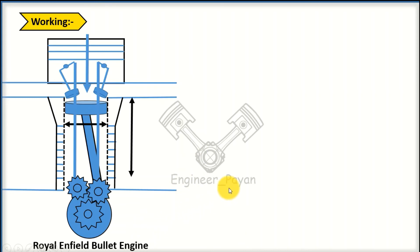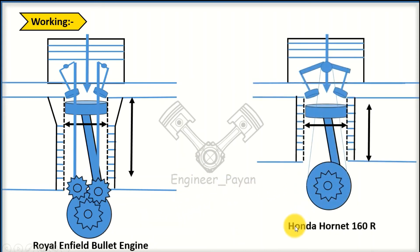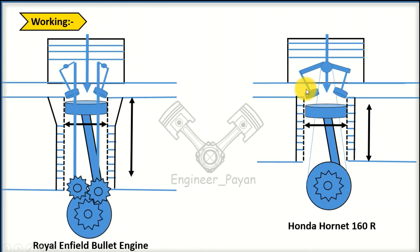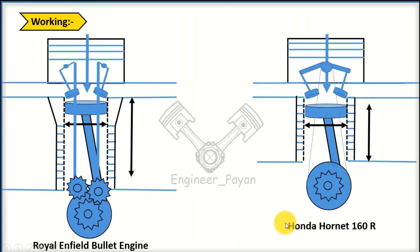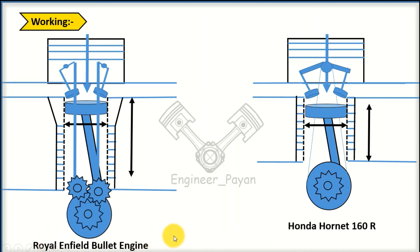If you look at the Honda Hornet, it has a bit less stroke than the bullet engine. With 4 strokes and exhaust gas, using this basic concept we can compare the bike engine and the bullet engine and understand why the bullet will produce its characteristic sound.